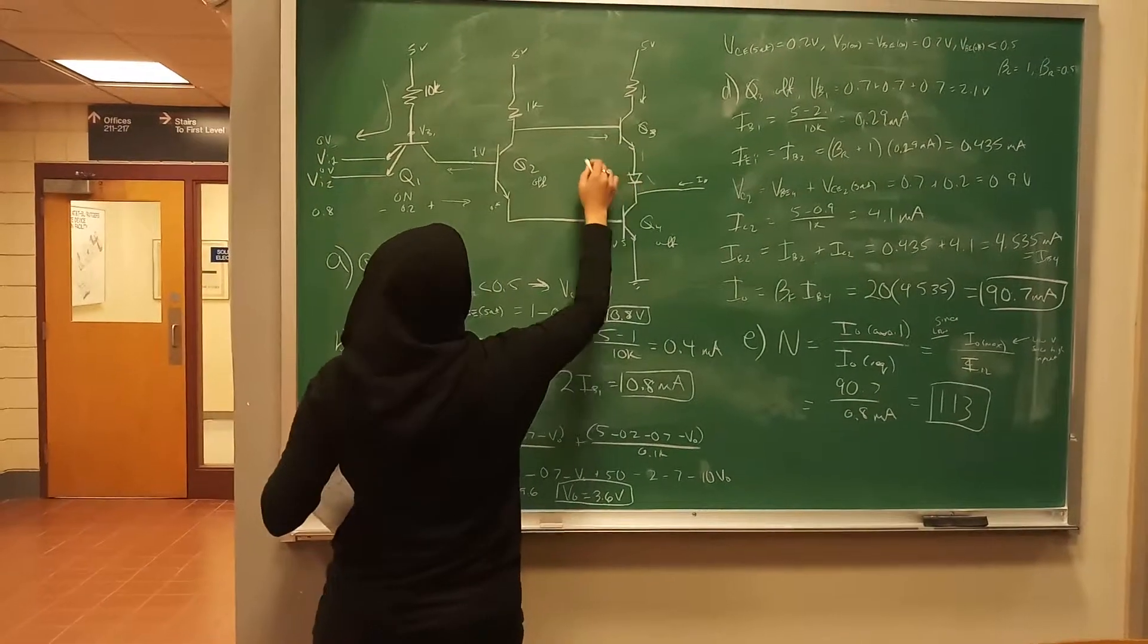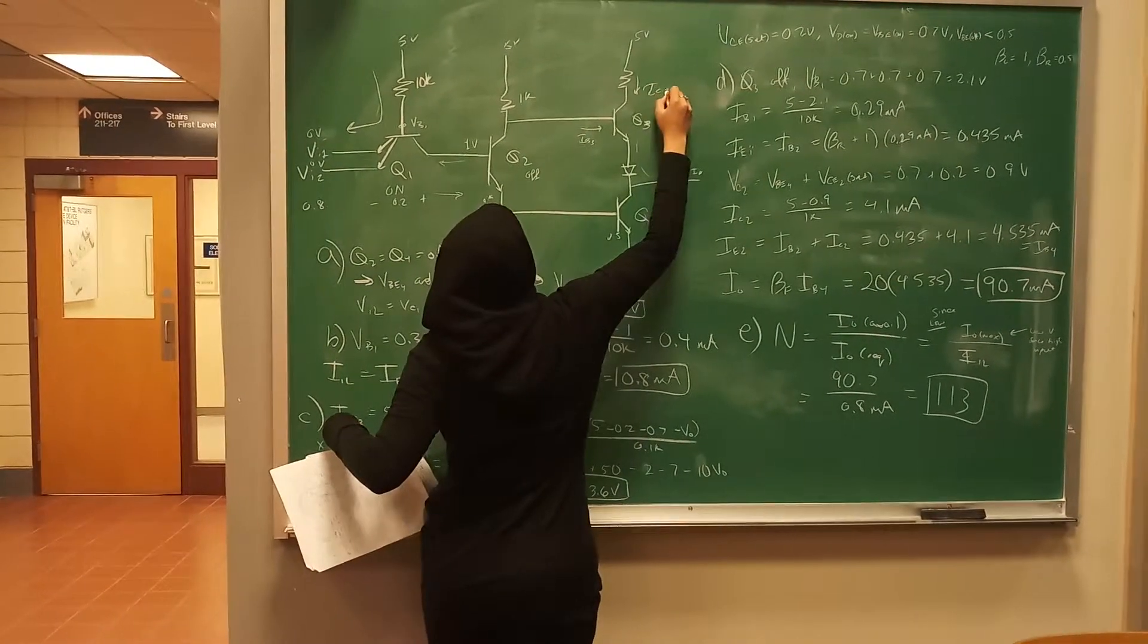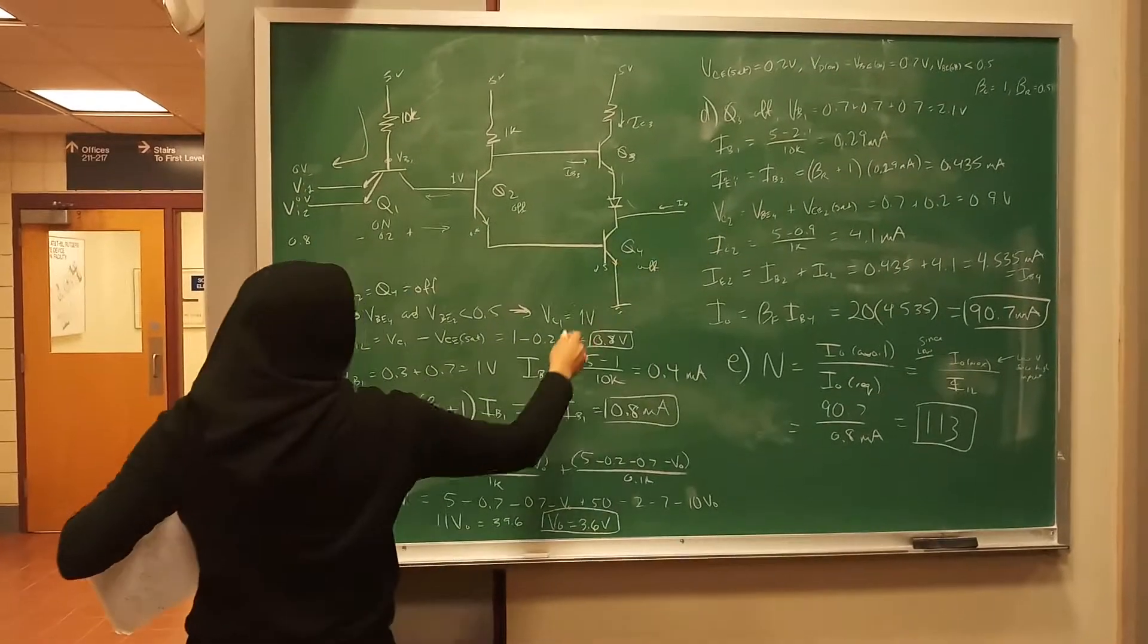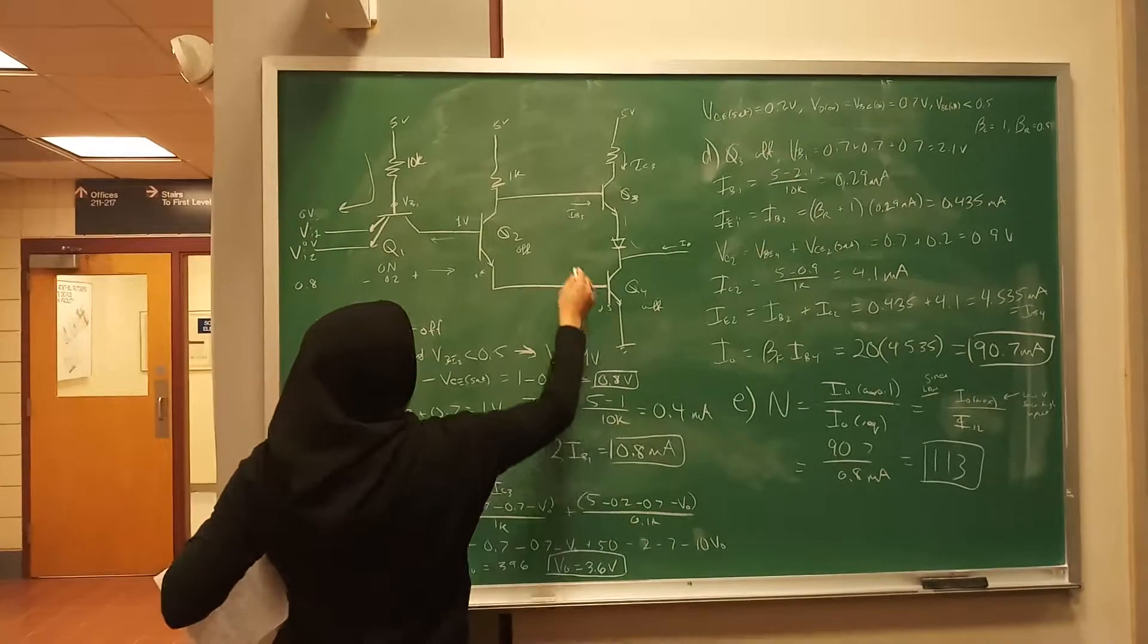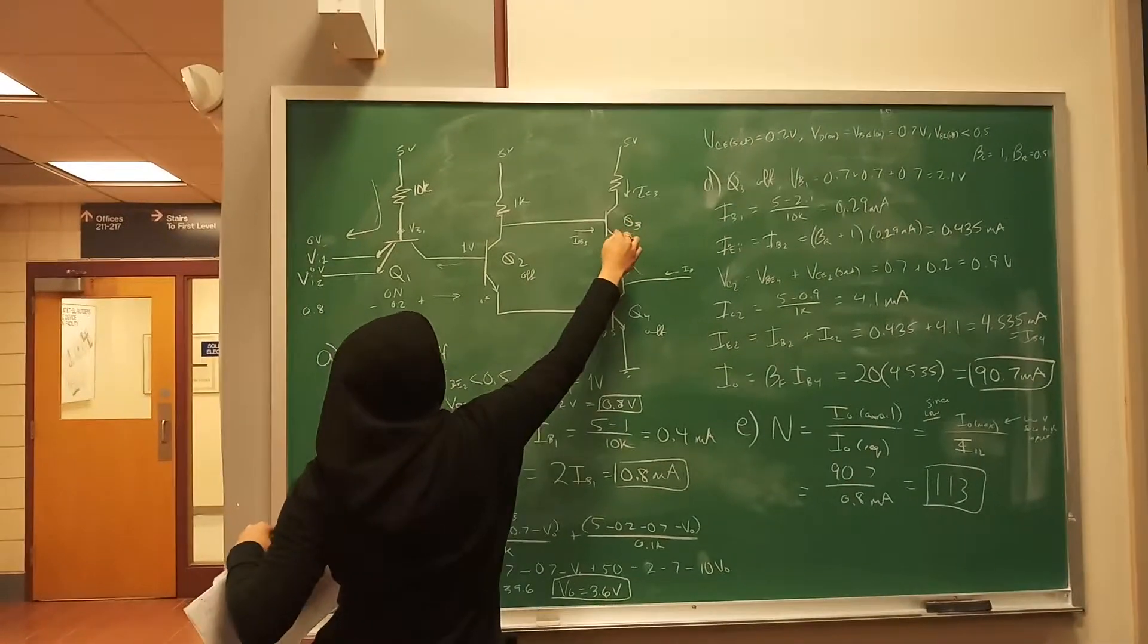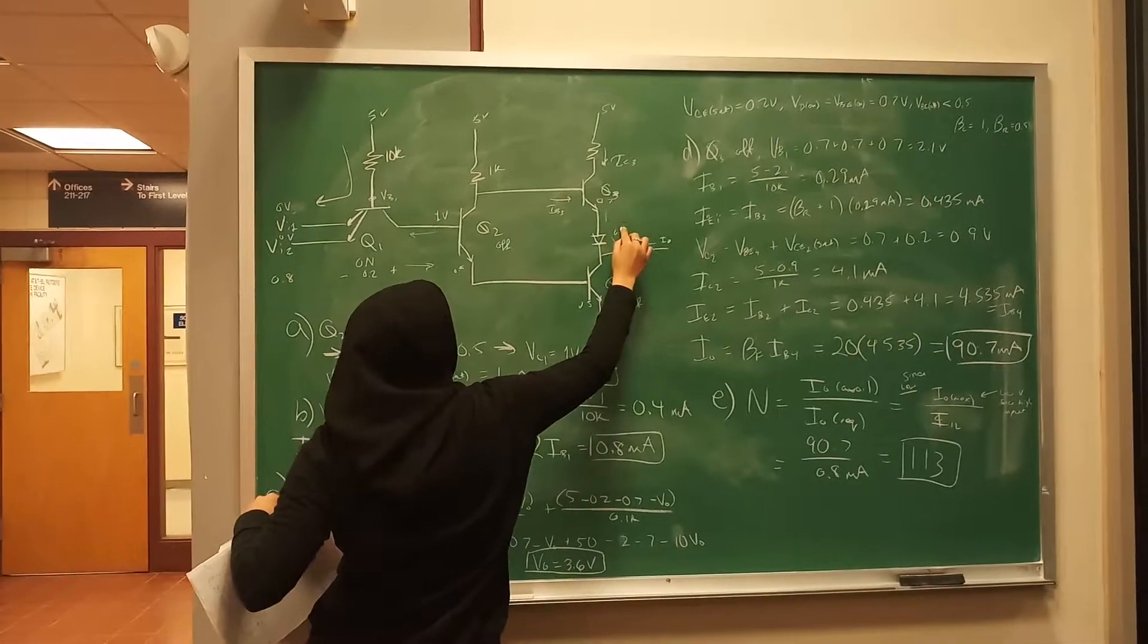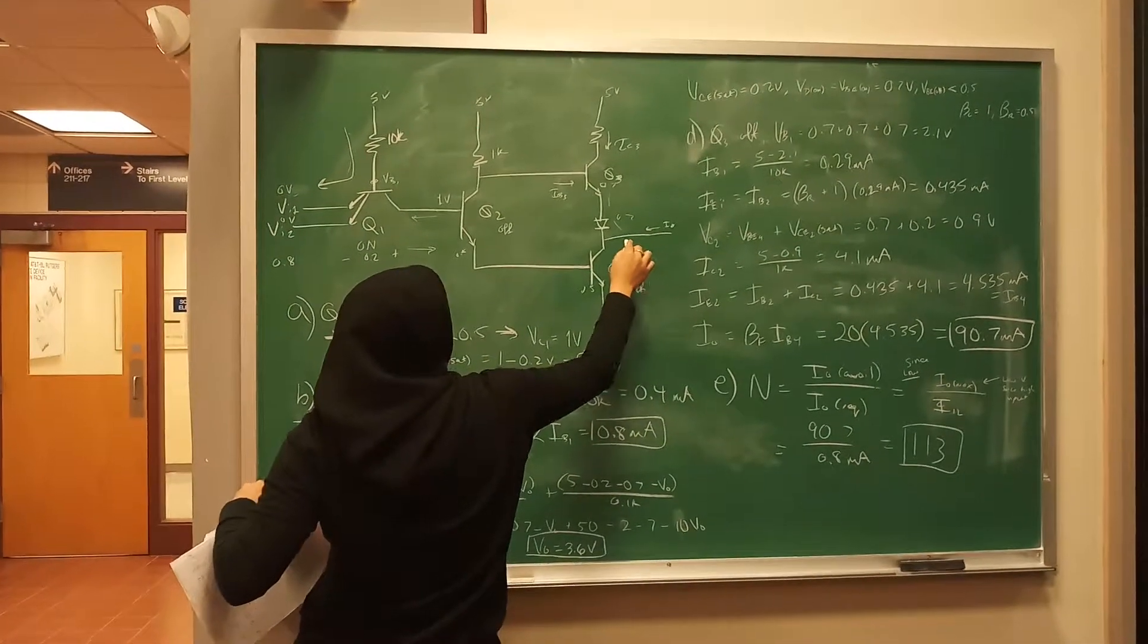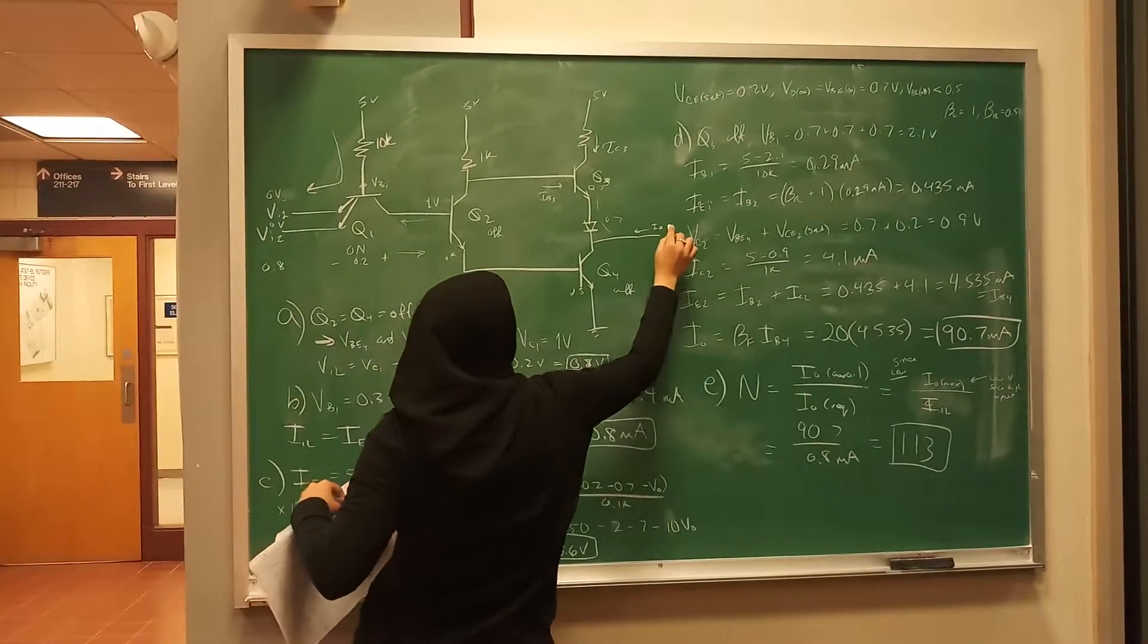This is I_C3. And then you can get this from here, 5 minus 0.7 from this one right here, and then 0.7 here gives you this difference. And then minus V_out would be this.